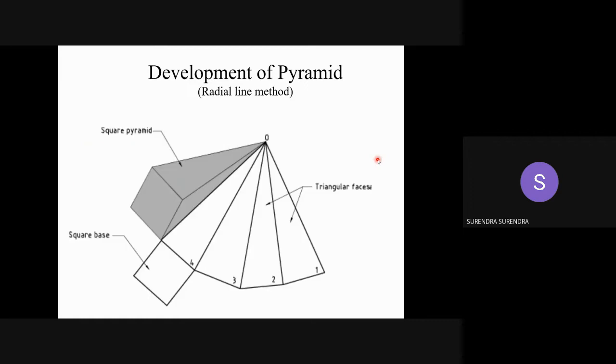So if it is a pyramid, see how all these lines are looking. They are joining towards apex. So like radial lines. Radial lines means the lines coming from the center of the circle to the circumference. So that's why we'll name it as a radial line method development of a pyramid.